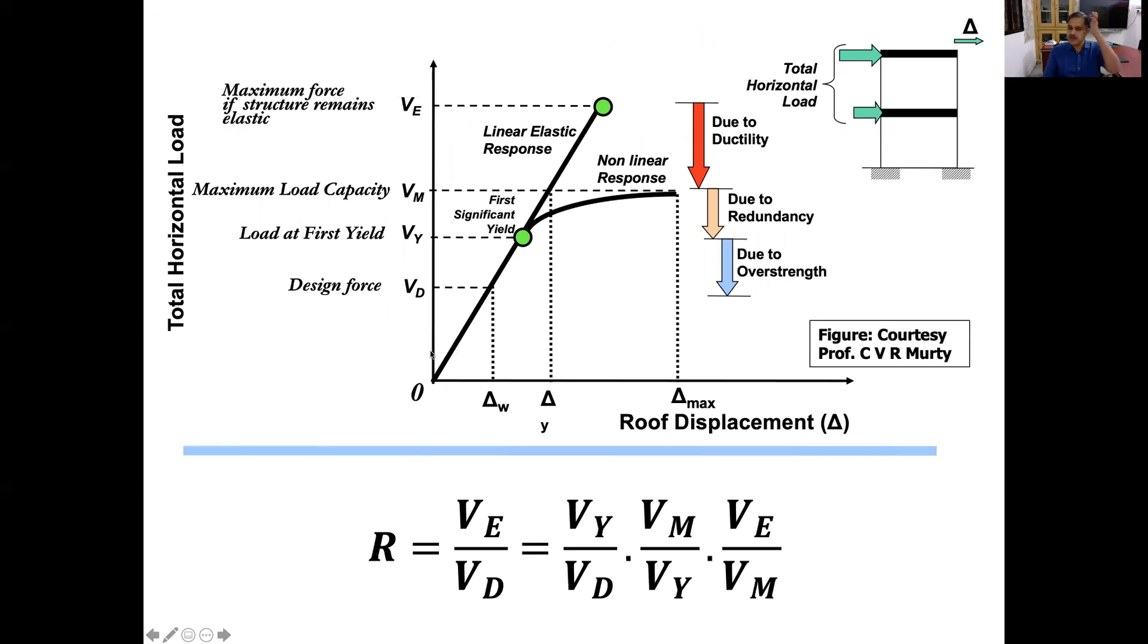This is base shear versus roof displacement graph. If we design a structure for a design force VD and then start pushing the structure laterally, the structure yields at a point which is slightly higher than the design force. Why? Because of the inherent over-strength which is present in the materials. It yields at a higher point than we design.